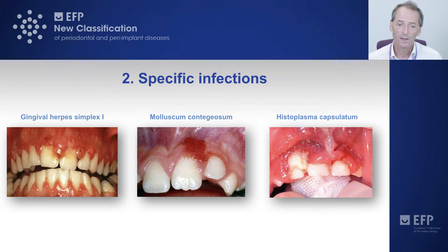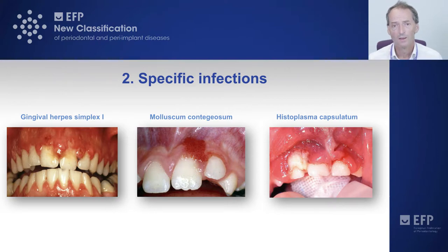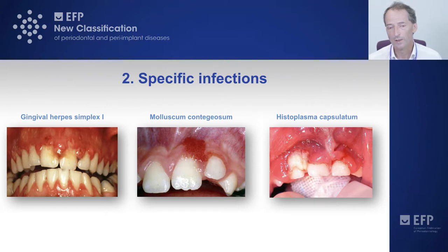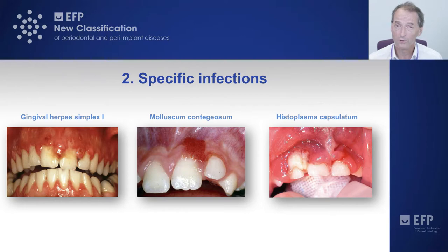There are also fungal infections. In this case, a deep fungal infection — Histoplasma capsulatum — is an important diagnosis because it tends to manifest only in people with very severe immune suppression. This two-year-old child had a very severe hereditary immune deficiency and sadly didn't survive beyond 18 months. The diagnosis was histoplasmosis rather than traditional candidosis or what looks on the photograph like a necrotizing periodontitis, but clearly it wasn't.